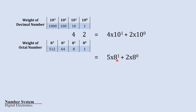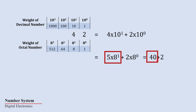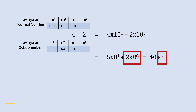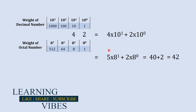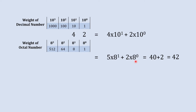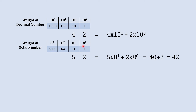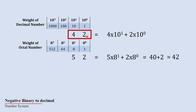8 raise to 1 is 8, so 5 into 8 gives us 40, and 8 raise to 0 is 1, so 1 into 2 is 2. So 40 plus 2 gives us 42. So the form 5 in the 8's place and 2 in the 1's place is the octal equivalent. We write 5 in 8 raise to 1's place and 2 in 8 raise to 0's place. So 52 is the octal equivalent to decimal 42.